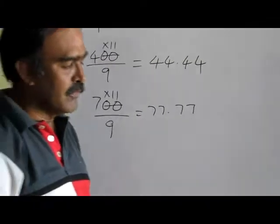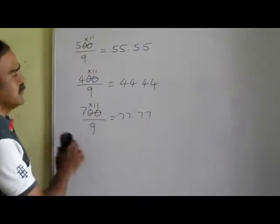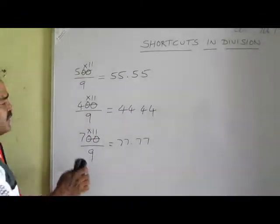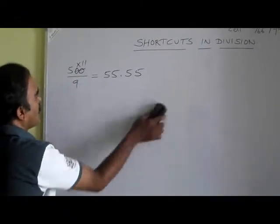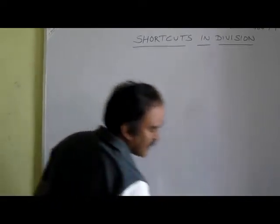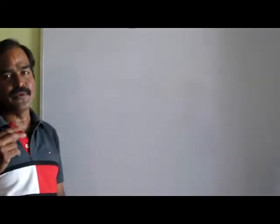So these are the techniques. What is the idea behind this? The total is 20. 20 minus 11 is 9, and 20 minus 9 is 11. So take 20 as the target or reference point.